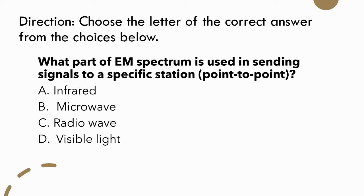Question 5: What part of the electromagnetic spectrum is used in sending signals to a specific station or point-to-point? A, infrared. B, microwave. C, radio wave. D, visible light. The correct answer is B, microwave.